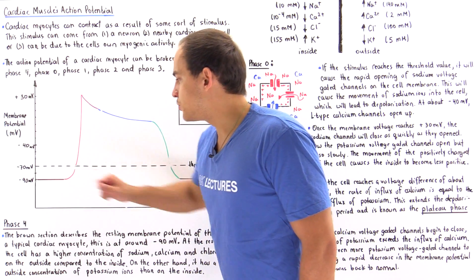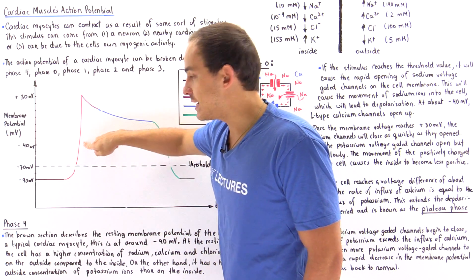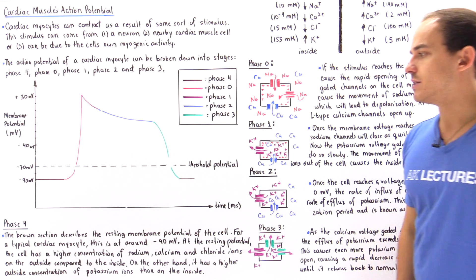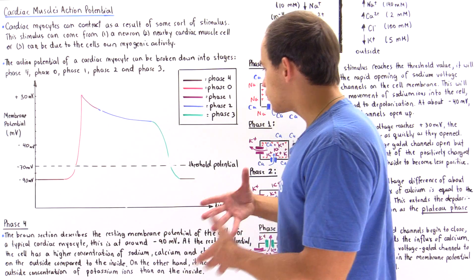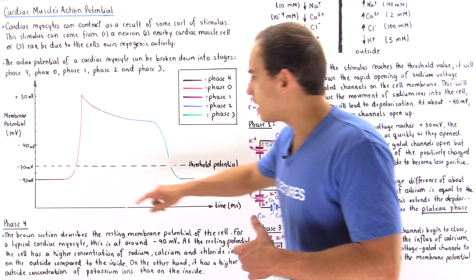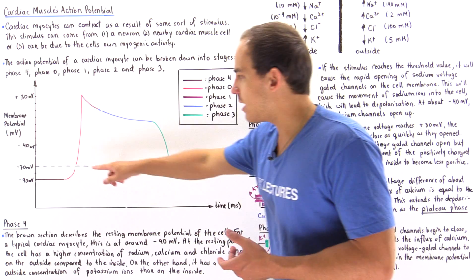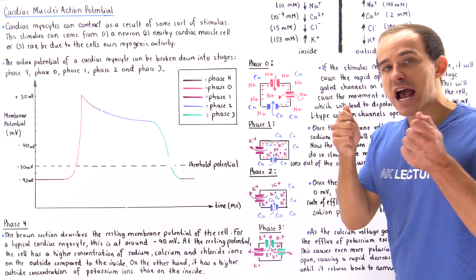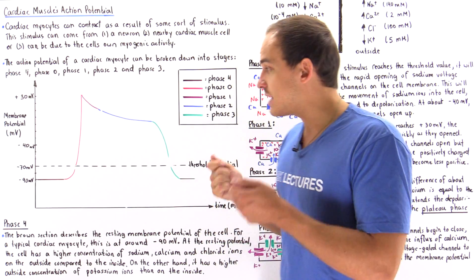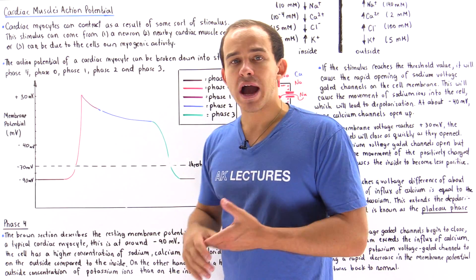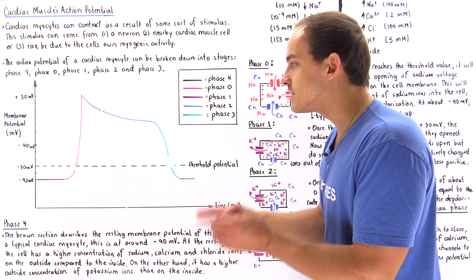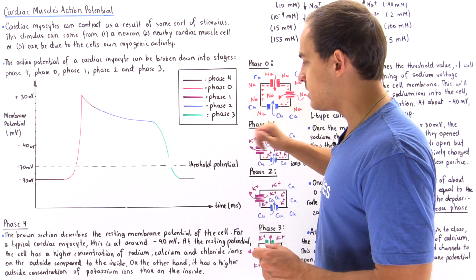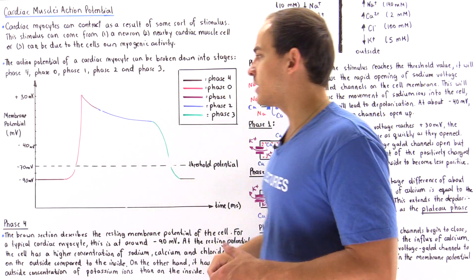The brown region is phase four, the red region is phase zero, the purple region is phase one, the blue region is phase two, and the green region is phase three. The dashed line is our threshold potential — the voltage difference that must exist across the membrane for the action potential to generate. If the stimulus does not reach this value, no action potential is generated, but if it reaches or exceeds this value, the action potential is generated.